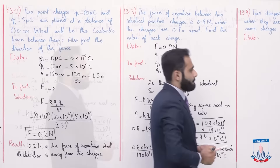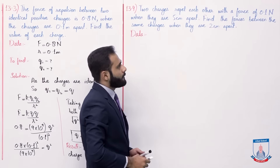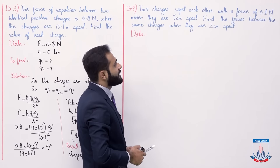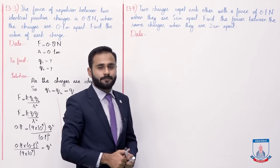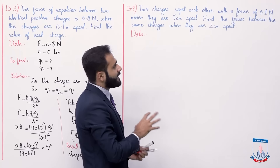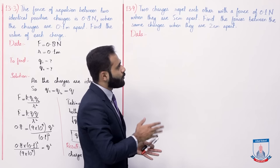Now numerical number 13.4. Two charges repel each other with a force of 0.1 newton when they are 5 centimeter apart. Find the force between the same charges when they are 2 centimeter apart. So two charges repel and force is 0.1 newton when they are 5 centimeter apart.